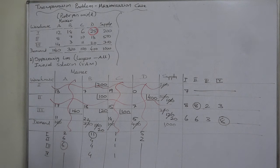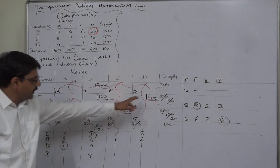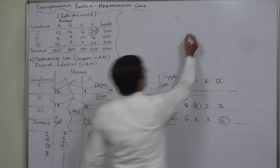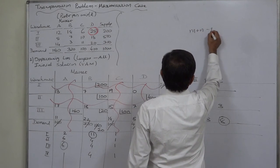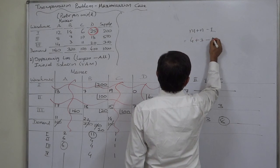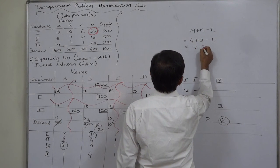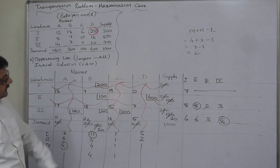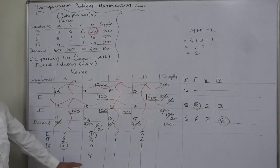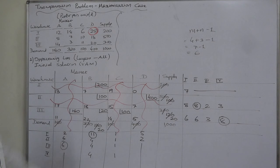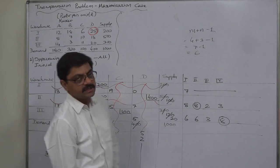Now count the number of cells with allocation: 1, 2, 3, 4, 5, 6. The condition is M plus N minus 1: 4 rows plus 3 columns minus 1 equals 7 minus 1, which is 6. That means allocation must be in at least 6 cells — and there are 6 cells with allocation. So we can say the degeneracy condition is satisfied.